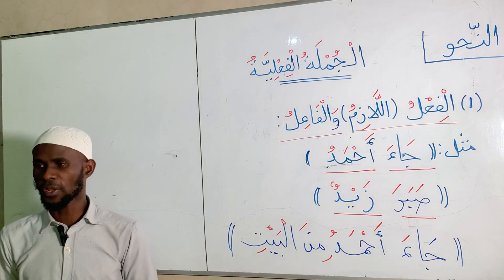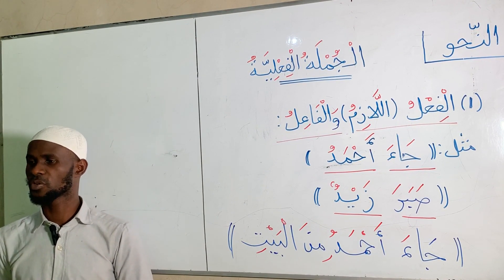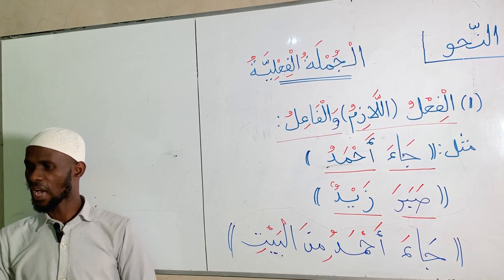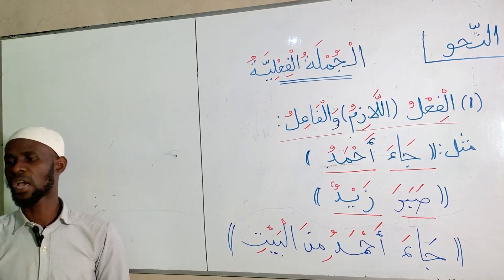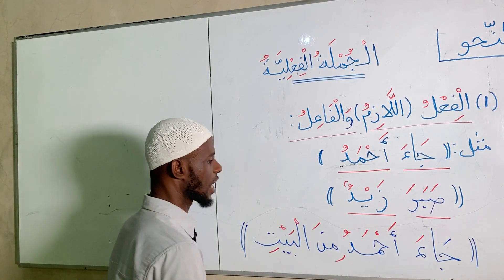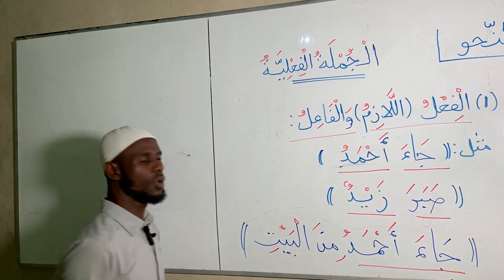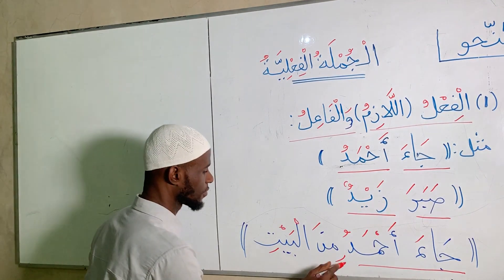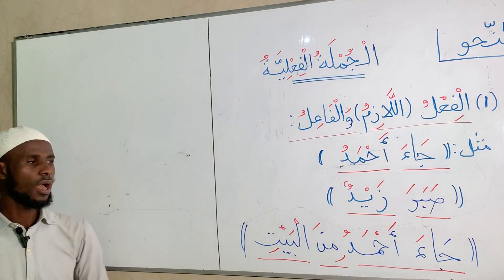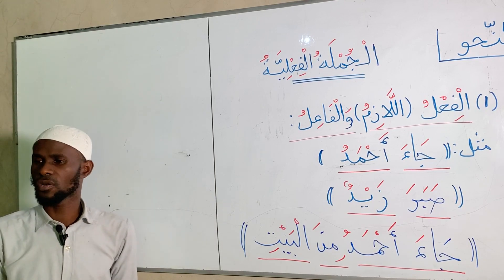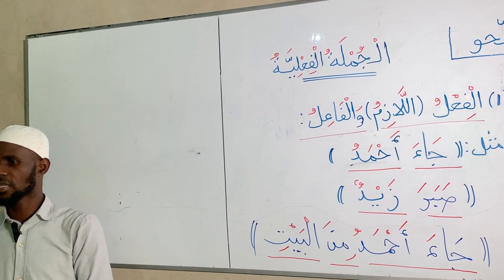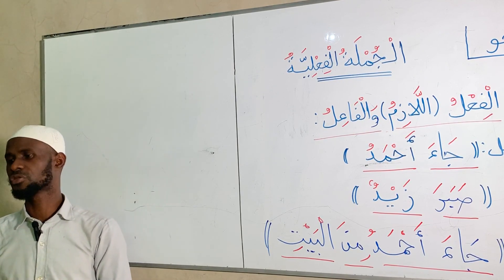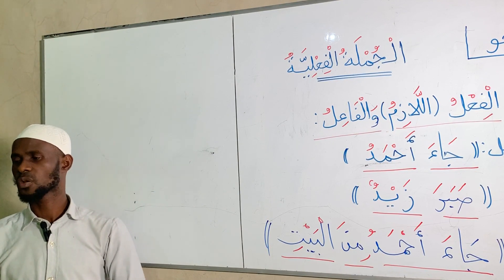For those that went to Arabic school, you say: where are you coming from? I came from, or I arrived from the house. So we say: Jaa Ahmadu minal-bayti — which is complete: Ahmed arrived. Where did Ahmed arrive from? He arrived from the house. Similarly you can say: Sabara Zaidun 'indal-bala'i, or Sabara Zaidun lil-bala'i — Zaid was patient with tribulations or afflictions.